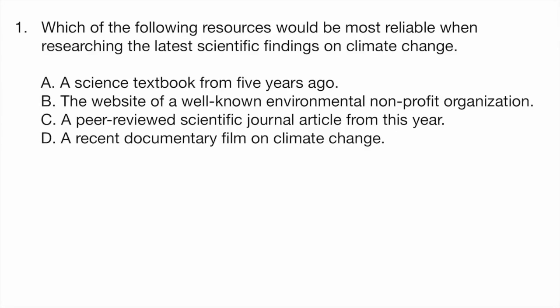Problem 1. Which of the following resources would be most reliable when researching the latest scientific findings on climate change? A: a science textbook from 5 years ago. B: the website of a well-known environmental non-profit organization. C: a peer-reviewed scientific journal article from this year. Or D: a recent documentary film on climate change.